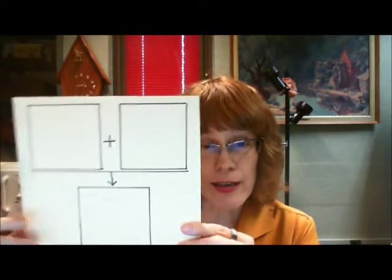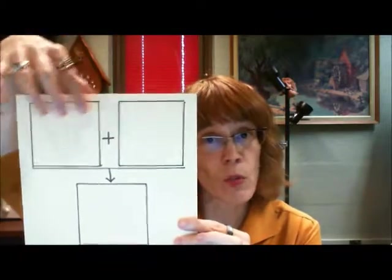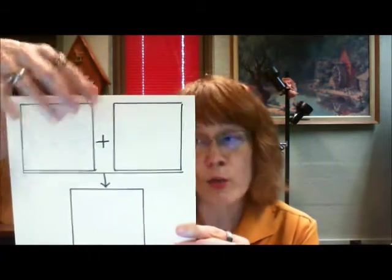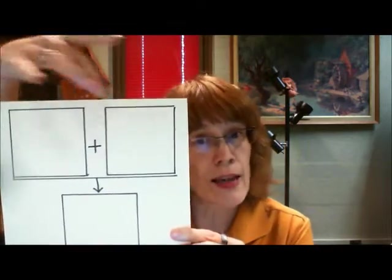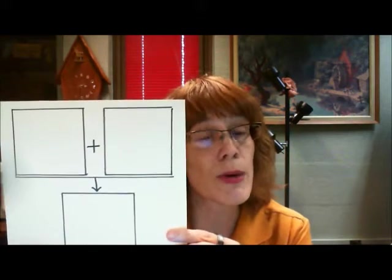As you can see, we have more than one idea on the top here. That means we have more than one reason. Because there's a plus there, we know that they need to work together in order to establish the conclusion. So we call them dependent reasons.